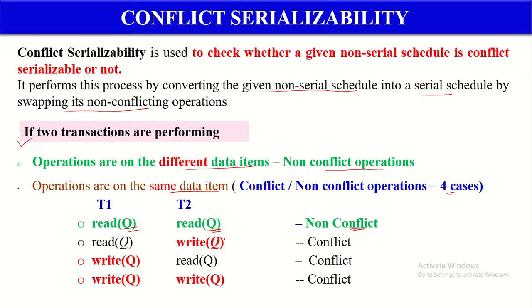Whereas if any one of the Transactions performs a Write Operation, then that is known as a Conflict Operation. For example, if T2 is performing a Write Operation and T1 is performing a Read, it is a Conflict. Similarly if T1 does the Write Operation, it is also a Conflict. And in the fourth case, if both Transactions are doing Write Operations on the same Data Item, that is also a Conflict Operation. To summarize: operations on different Data Items are Non-Conflict, and Read-Read on the same Data Item is also Non-Conflict.